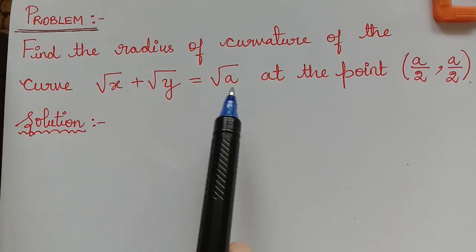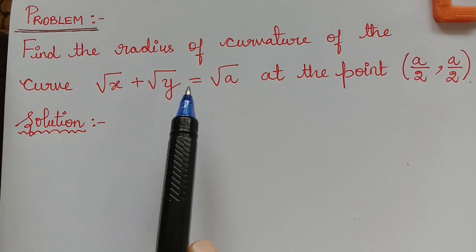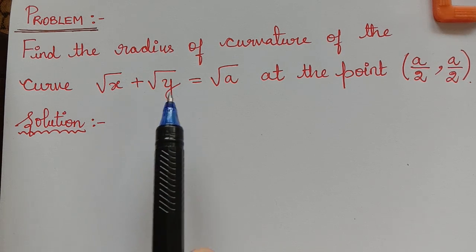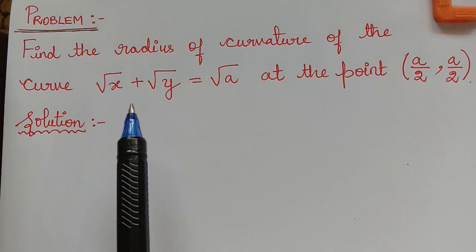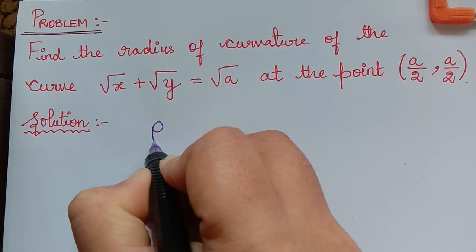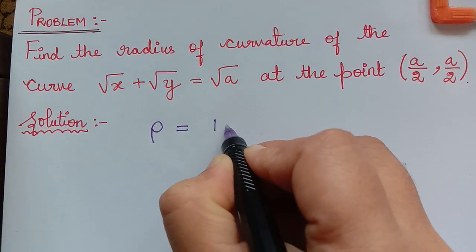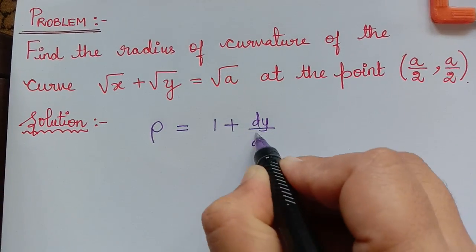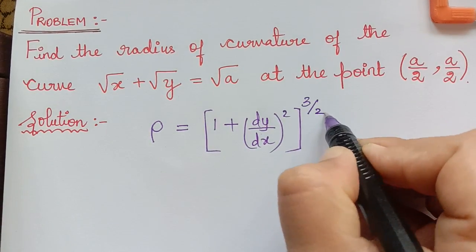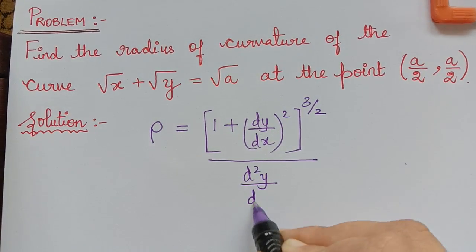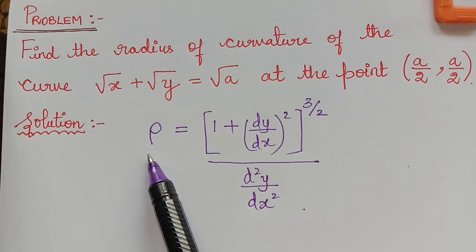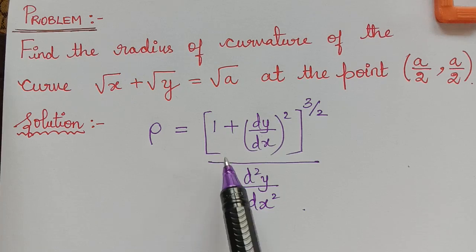So we have to use the radius of curvature formula for the Cartesian equation. The radius of curvature is represented by ρ, and the Cartesian formula is given by (1 + (dy/dx)²)^(3/2) divided by d²y/dx². If the equation is in Cartesian form, then we use this formula for ρ.